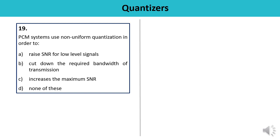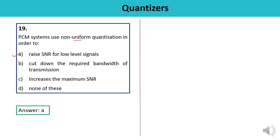Question 19: PCM systems use non-uniform quantization in order to — raise SNR for low-level signals, cut down required transmission bandwidth, increase maximum SNR, or none? PCM uses non-uniform quantization to raise SNR for low-level signals. This is the correct answer — A.